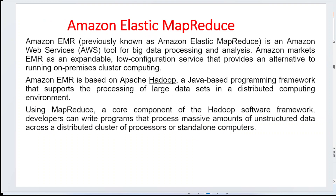The first vendor is Amazon Elastic MapReduce. 'Elastic' means flexible — you can stretch it as much as you want. Amazon EMR provides a lot of web services used for big data processing and analysis. We use it to analyze huge amounts of massive datasets. You can use any cloud service — Amazon, Azure, or others — to analyze your data. EMR is completely expandable and provides low-configuration services as an alternative to running on-premise.